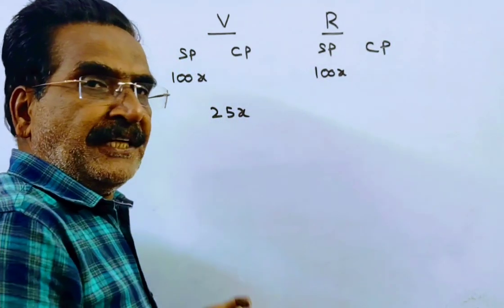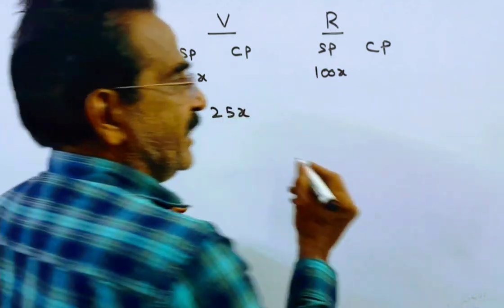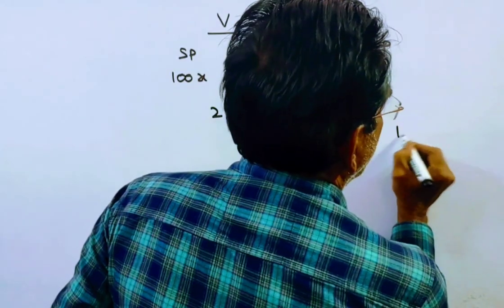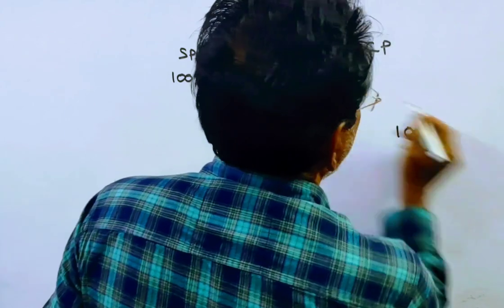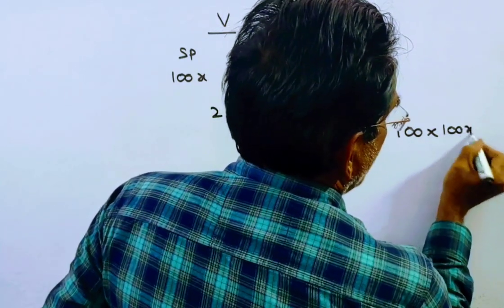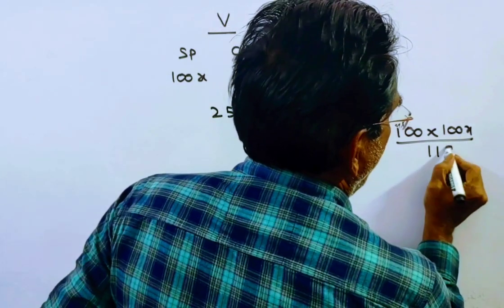Roshan calculates his profit on cost price, so let us find the cost price. Cost price equals selling price times 100 divided by 100 plus profit percentage.